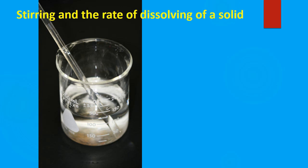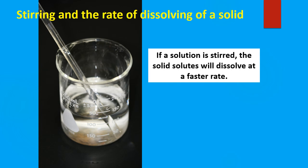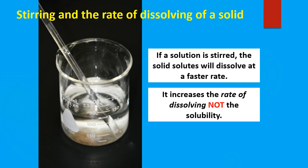Stirring or agitation — how does that affect it? If you stir a solution or you agitate it, you shake it, then the solid solute will dissolve at a faster rate. So stirring and agitation increases the rate of dissolving, or the rate of solution, and causes the solute to dissolve faster. Be careful here — it increases the rate of dissolving, not the solubility. It increases how fast it dissolves, not the amount it can dissolve.